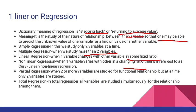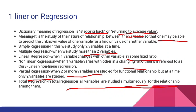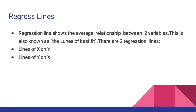Partial regression — jab hamare paas do ya do se zyada variables hon, jaise teen variables ke aapas mein relationship hai, par ek time par hum sirf do variables ki study karein to woh ho jaata hai partial regression. Total regression mein saare ke saare variables ek saath study kiye jaate hain — saare variables ko ek saath hi study kiya jaayega, woh ho jaayega total regression.